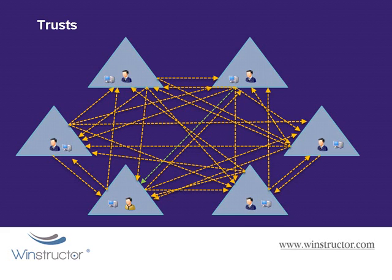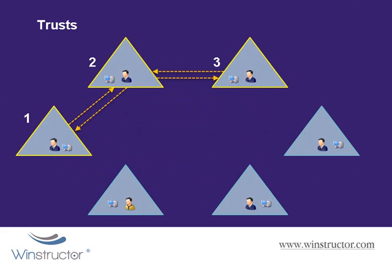In fact, I've probably missed out on including a couple of trusts in this image, which should indicate how difficult it can be to get it right. Another thing with NT4 trusts is that they're non-transitive, meaning that just because domain one and two trust each other and domain two and three trust each other, it doesn't mean that domain one or three will trust each other. A trust relationship would have to be established explicitly between one and three for this to occur.